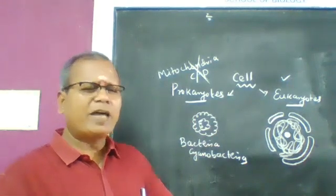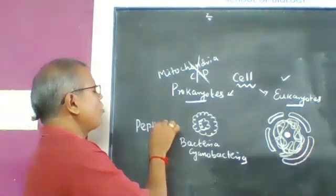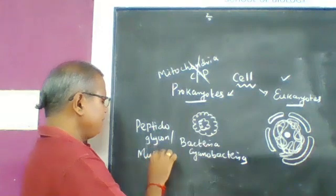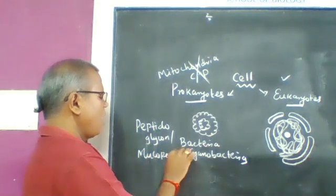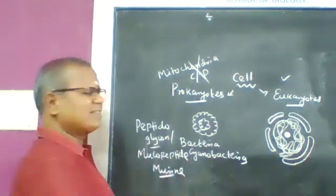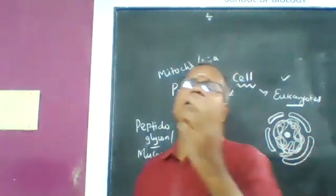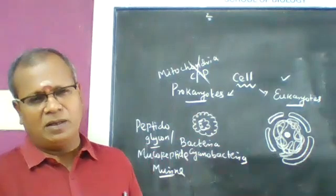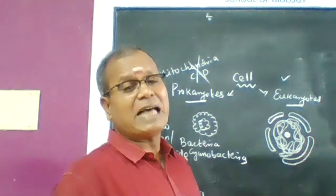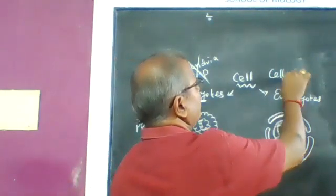In prokaryotic organisms, the cell wall is made up of peptidoglycan, also called mucopeptide or murein. In eukaryotic organisms, if a cell wall is present — because it is absent in animal cells — it is generally made up of cellulose.